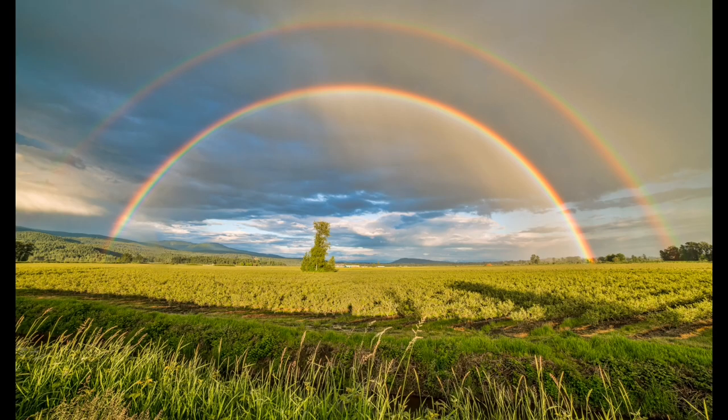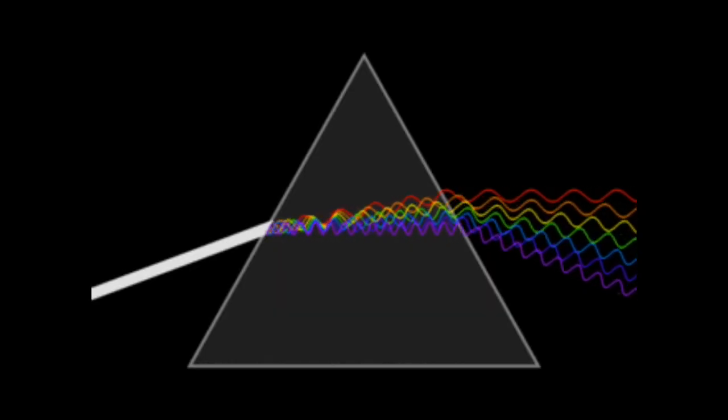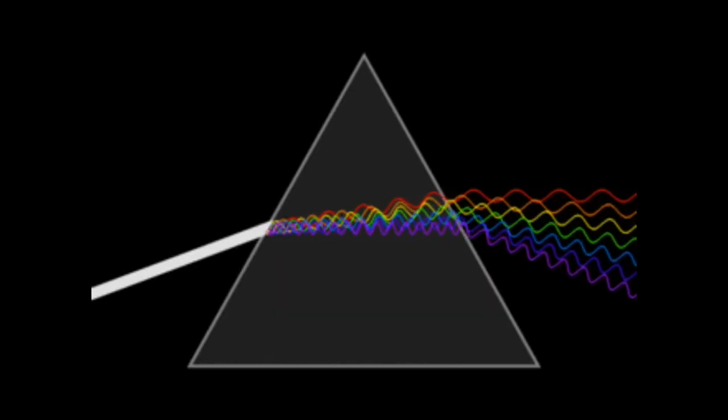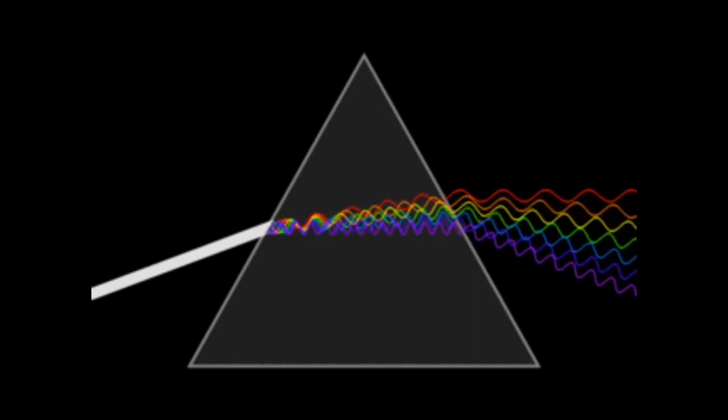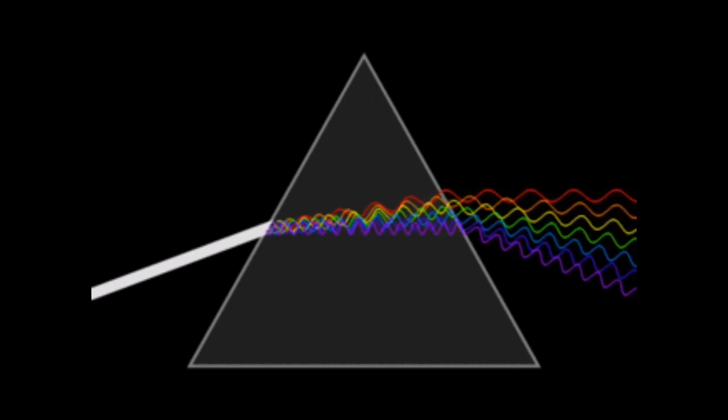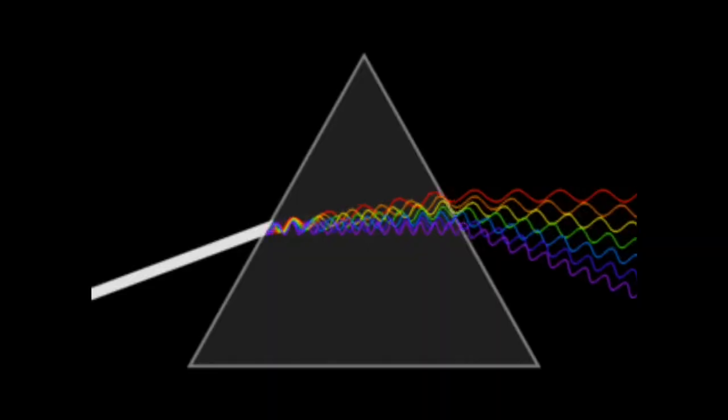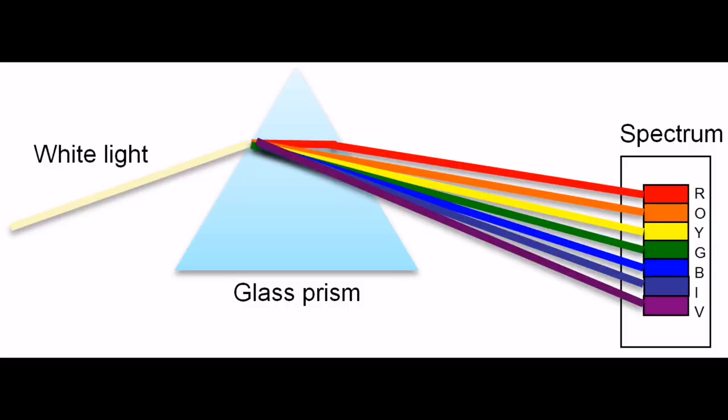But there's a way to separate these colors. If you pass the white light through a prism, you can see the colors separated. So these colors have certain energies and these energies travel like waves in the ocean. Some waves are choppy and short while other waves are longer.